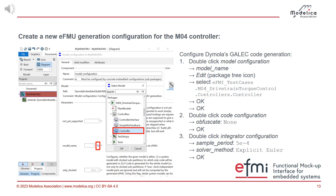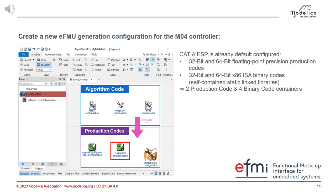Then close the dialogs with OK. Normally you would configure the production code to generate. We use a tool called CATIA ESP — a separate production code generator for EFMI. It supports 32-bit and 64-bit floating point precision, and by default this is all configured. So we will generate these two production codes, and there is nothing you have to change unless you don't want to. By default, if you have CATIA ESP available, this will be the configuration.